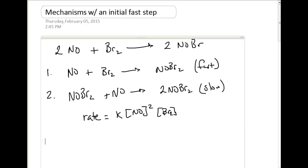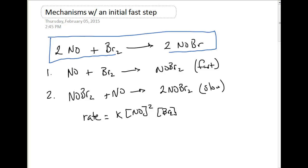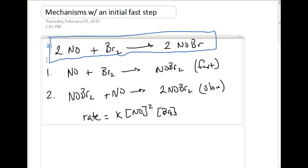So overall our reaction here is 2NO plus Br2 yields 2NOBr. Now they gave us two proposed mechanisms. First we have our first mechanism which has an initial fast step and then a second step which is slow.